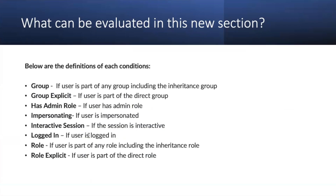Below are the definitions of each condition. Group: if the user is part of any group, including inherited groups. Group explicit: only the direct group the user is part of. Has admin role: if the user has an admin role. Impersonation: if the user is being impersonated. Interactive session: if the session is interactive. Login: if a user is logged in. Role: if the user is part of any role, including inherited roles. Role explicit: if the user has a direct role, not considering inheritance.